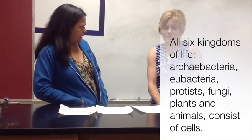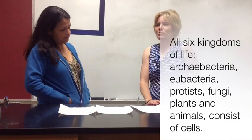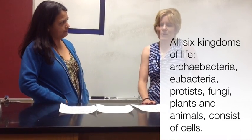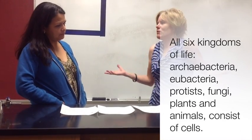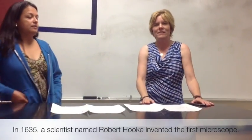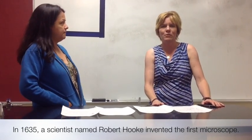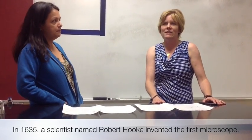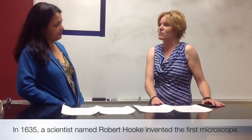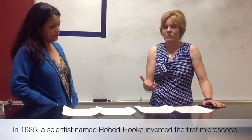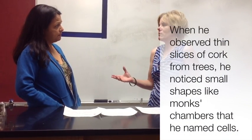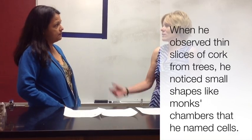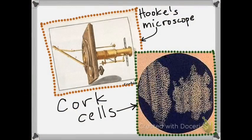So how were cells discovered? Before we had microscopes, people believed in all sorts of magic, how diseases were spread by vapors. In 1635, a man named Robert Hooke invented the first microscope and discovered cork cells. They weren't alive, they came from trees, but those tiny cells reminded him of monks living in chambers, so he called them cells. Hooke used his early microscope to view cork cells.